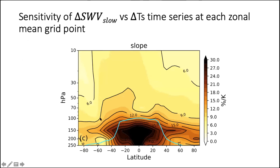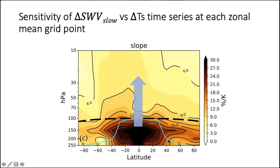We can get a clearer picture by repeating the regression at each zonal mean grid point and mapping the slope. Water vapor is most sensitive to surface temperature change in the tropical upper troposphere; as we go upward into the stratosphere, sensitivity decreases with altitude in the overworld. In the lowermost stratosphere at higher latitudes, sensitivity is larger than in the overworld due to different transport pathways, and sensitivity is also larger in the northern hemisphere.